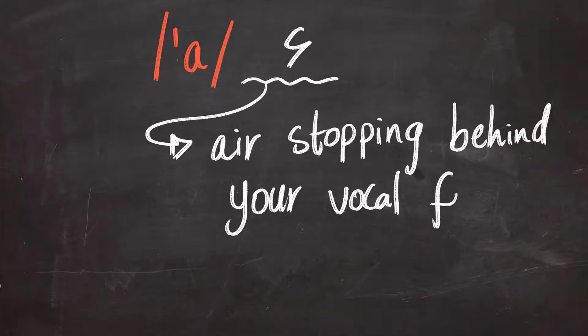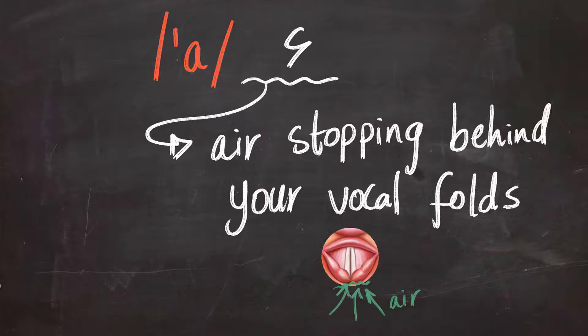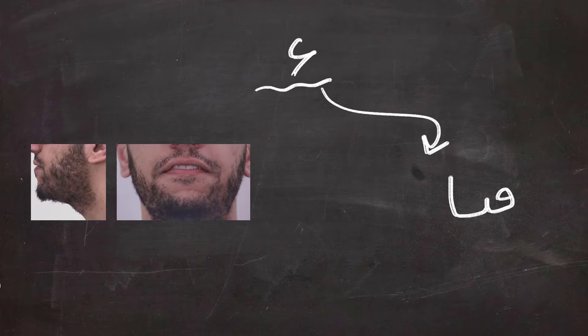And in order to understand the point, here is a chart for the vocal folds. And in producing the Hamza or the Eh sound, the sound is produced by keeping the air behind the vocal folds, which produces the sound. Here are some examples for the Eh sound, the Hamza.